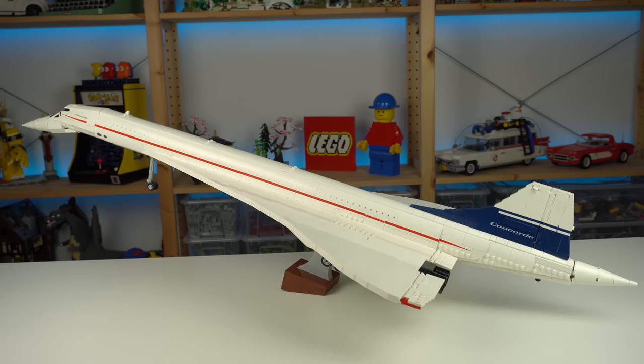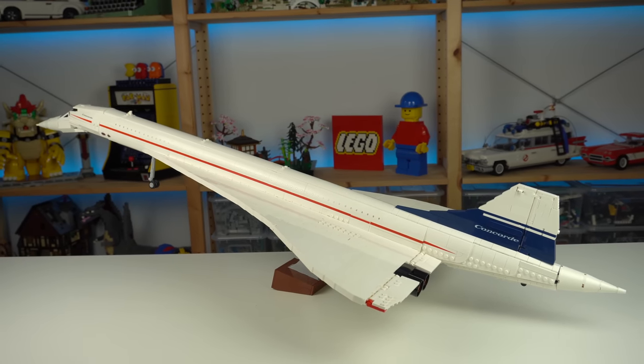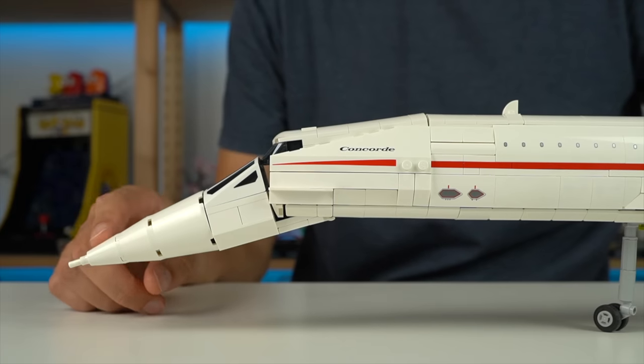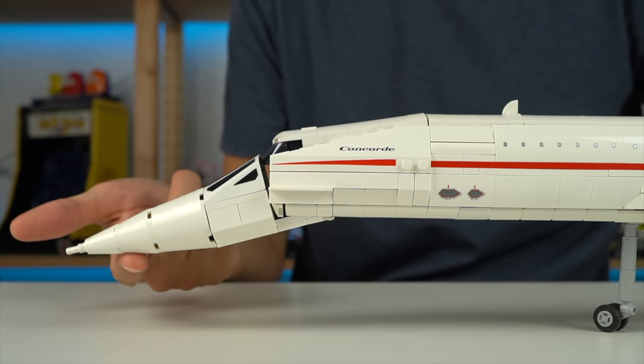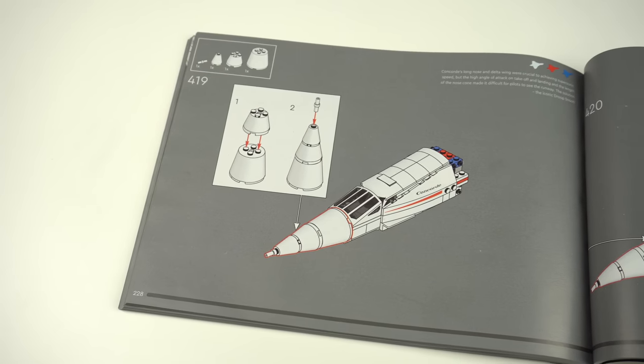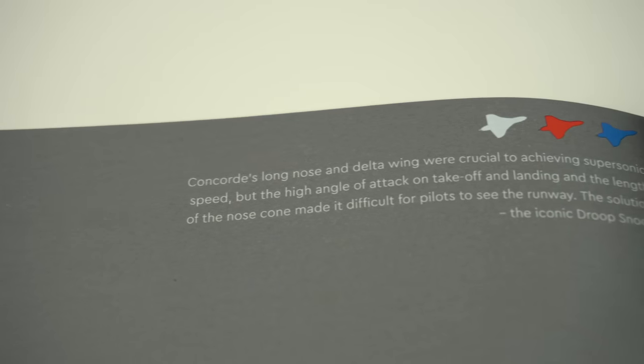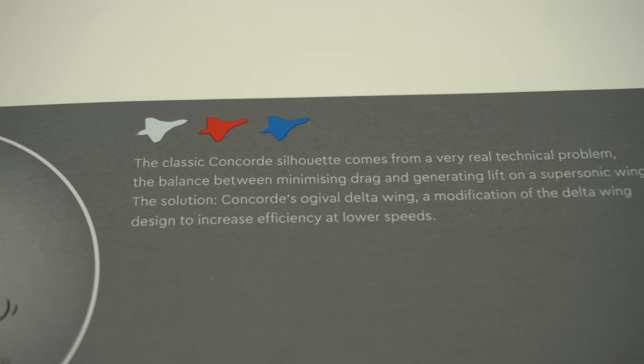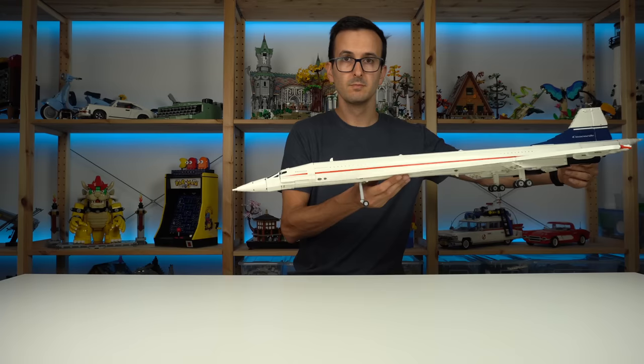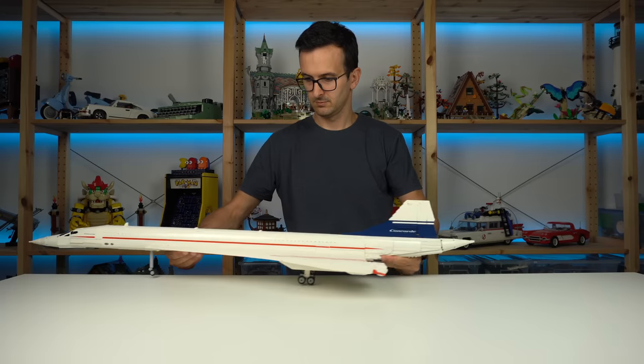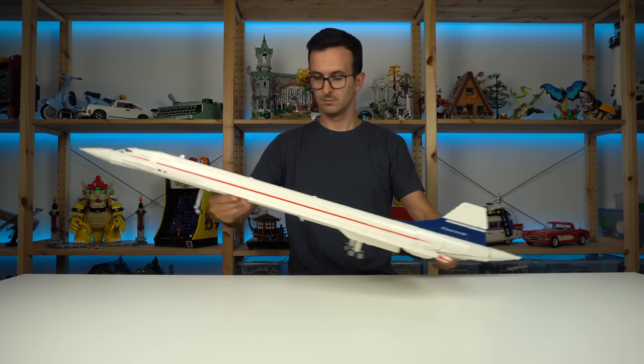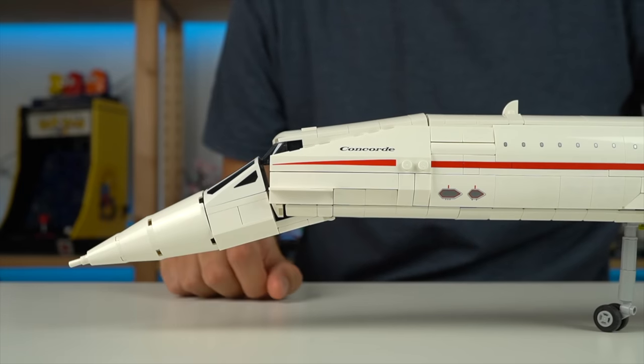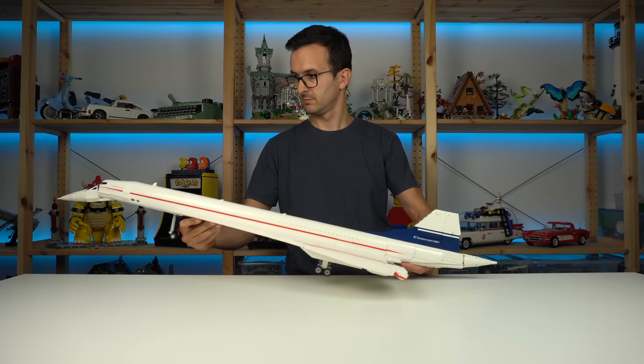The fact that the model is so big allowed the design team to have super accurate details of the real aircraft including the famous droop snoot. How do I know this? The building instructions take us on a journey explaining every significant aspect of the Concorde which is really awesome if you're into that kind of thing. In this particular case regular planes land like this but the Concorde had a high angle of attack during takeoff and landing and so the droop snoot allowed the pilots to actually be able to see the runway.